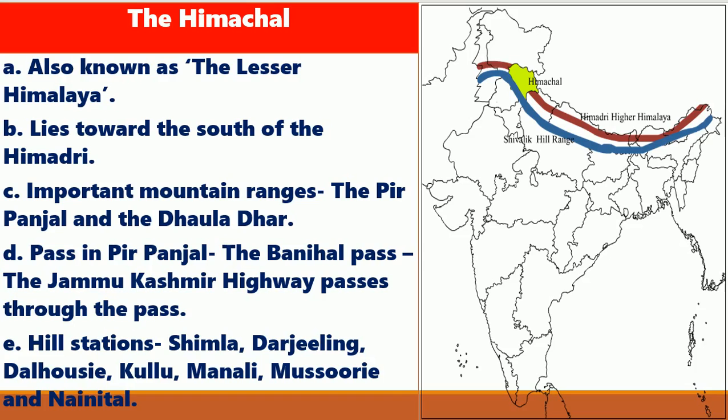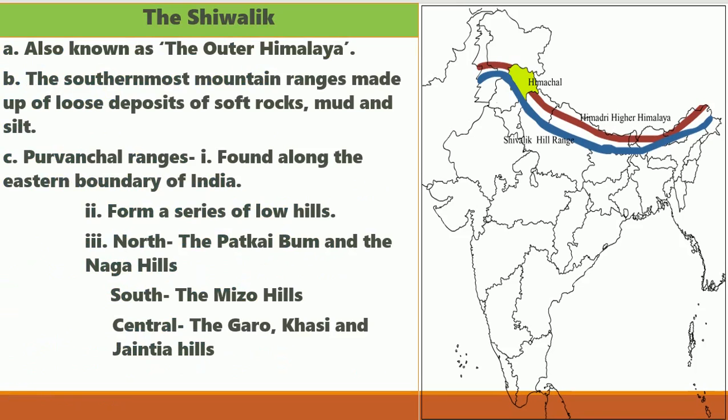Many popular hill stations such as Shimla, Dalhousie, Kullu Manali, Mussoorie, Nainital, and Darjeeling are situated in these mountain ranges. The Shivalik range is also known as the Outer Himalaya. It is the southernmost mountain range and is made up of loose deposits of soft rocks, mud, and silt. Because of this, these ranges are prone to landslides.